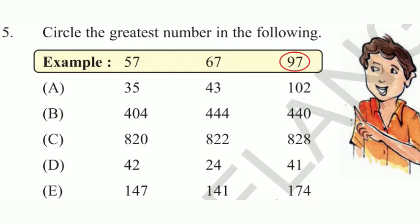For example, 57, 67, 97. Which is greatest? Very good. 97 is the greatest number.